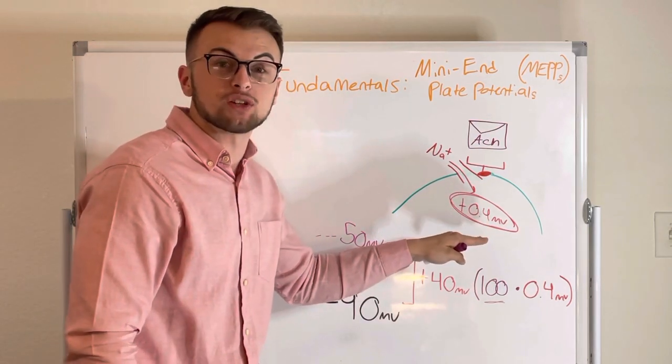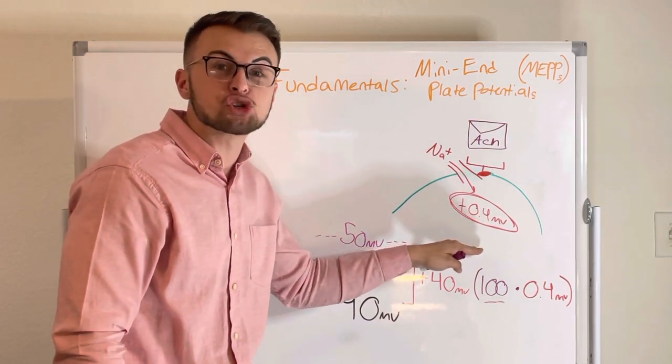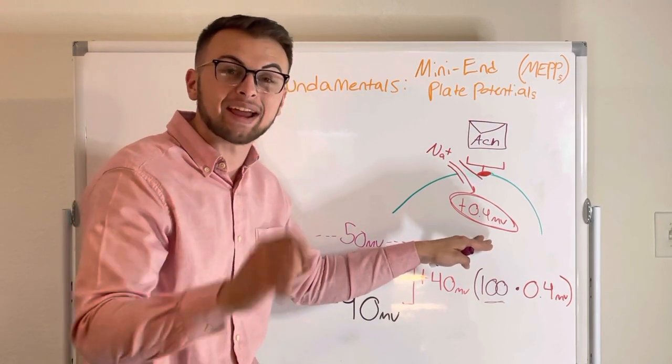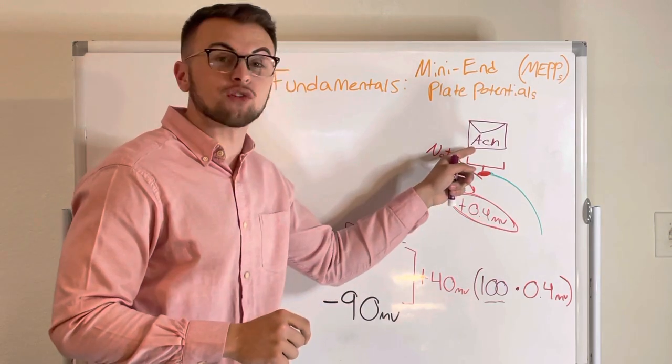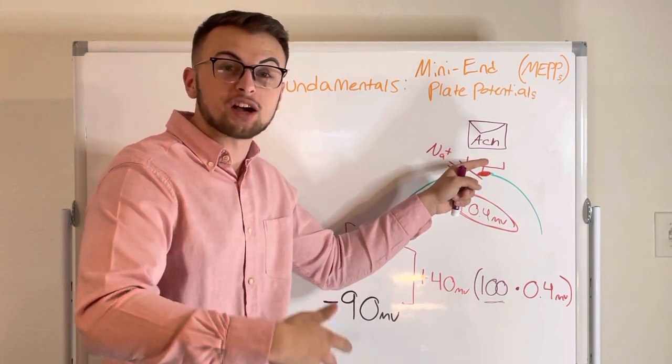This millivoltage change is called a miniature end plate potential or MEPP. Each vesicle envelope of acetylcholine causes an approximate change of about plus 0.4 millivolts in the post-synaptic cell.